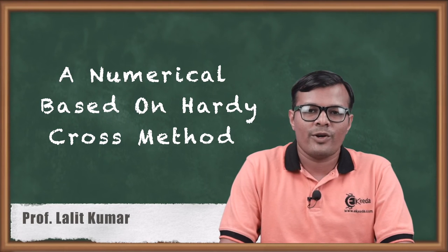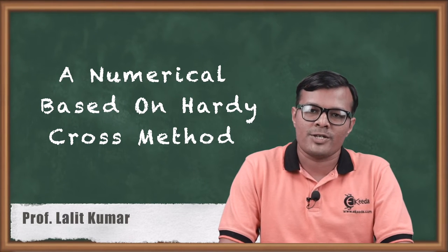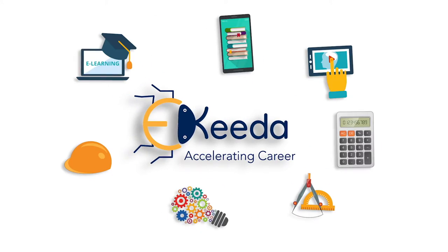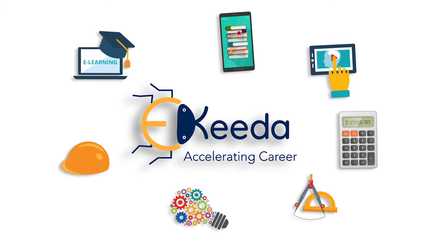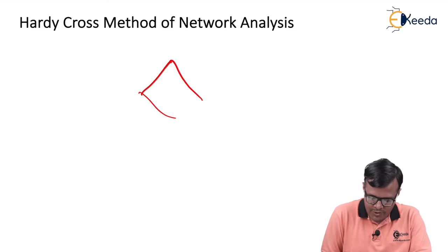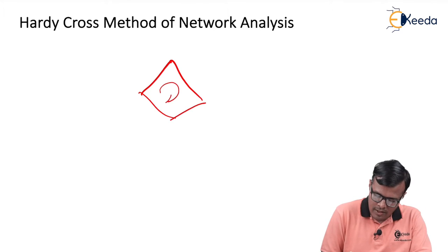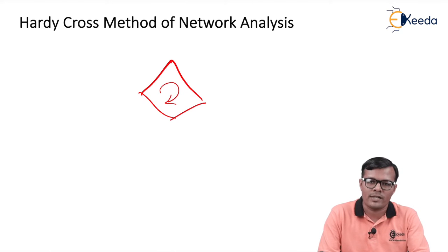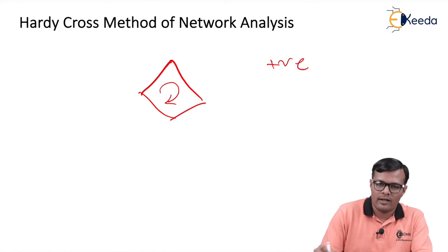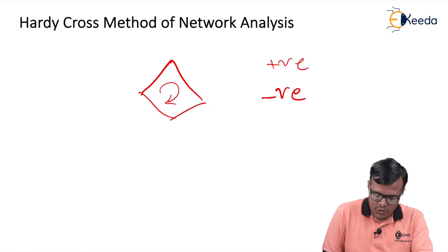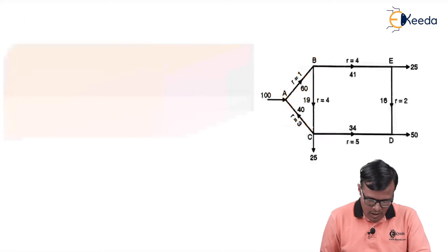Hello friends. In this video we are going to solve a numerical based on the Hardy Cross method, in which we are going to calculate the discharges through each and every pipe. In the Hardy Cross method we consider a pipe network in which we assume a loop direction as clockwise. Pipes flowing in the same direction as clockwise are considered positive, and if they flow in the opposite direction they are considered negative.